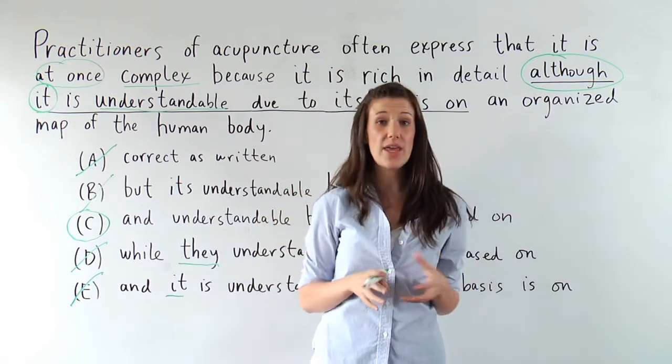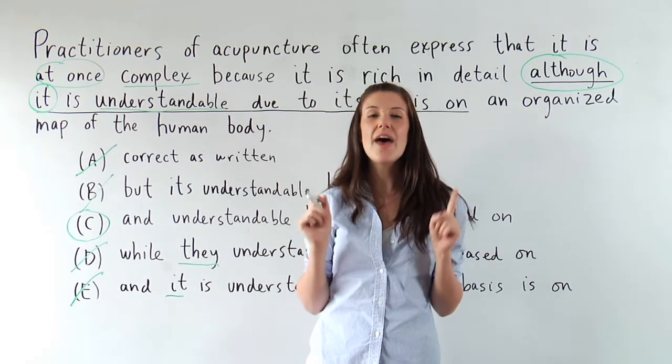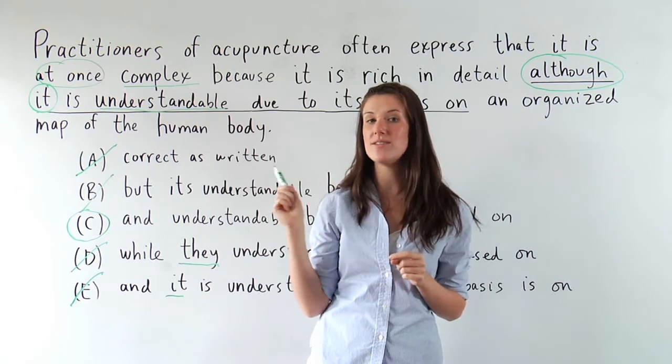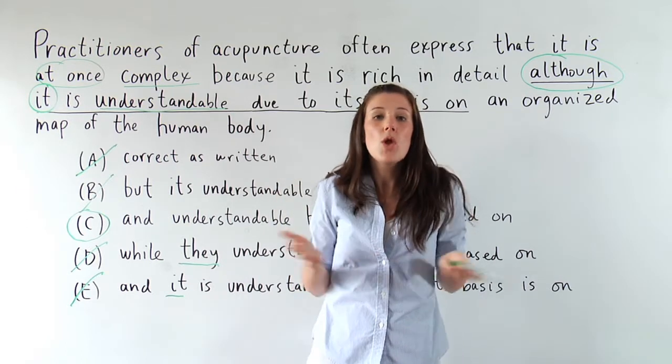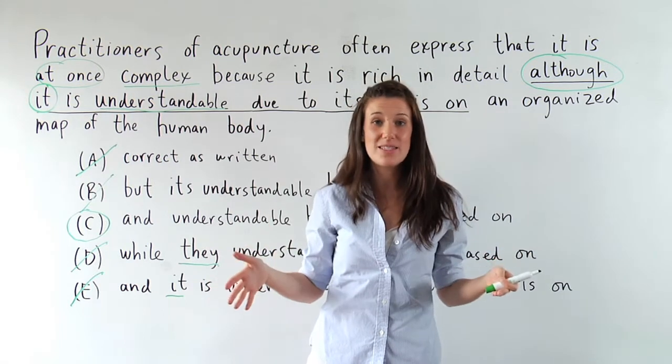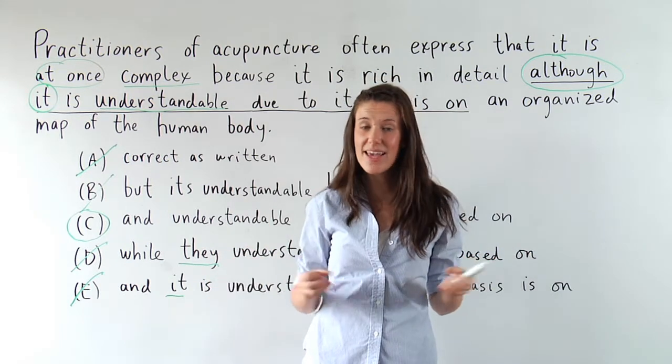Now there's another way you can get to the correct answer choice here, and that's by knowing how the connector buddies pair. I've got this at once as my first connector buddy. Well, what is at once friends with? What is the buddy of at once? Idiomatically, it's and.